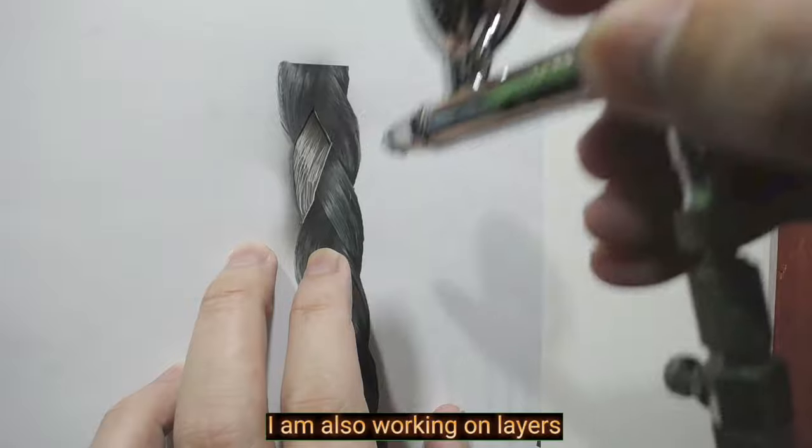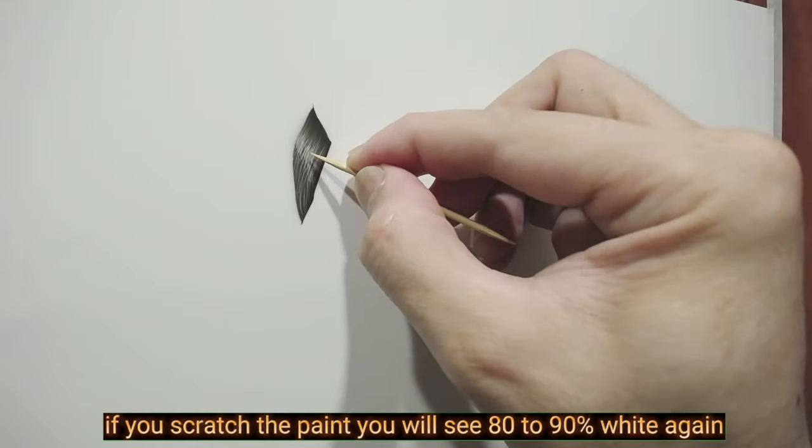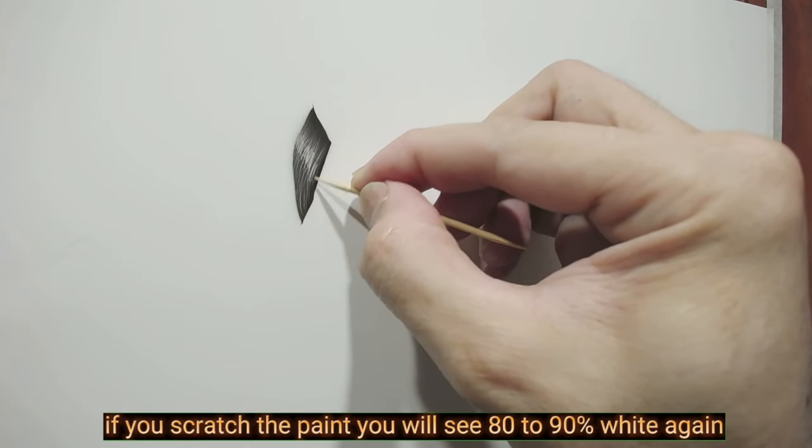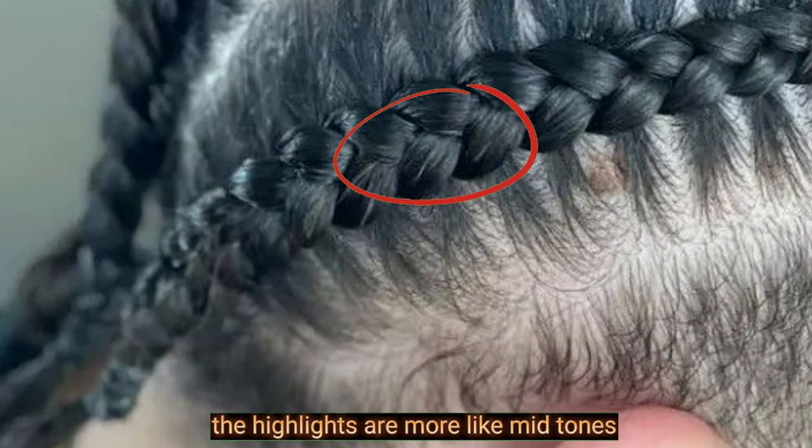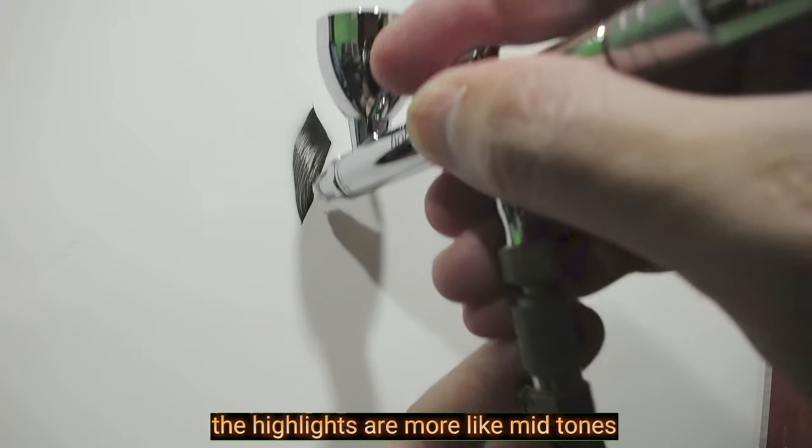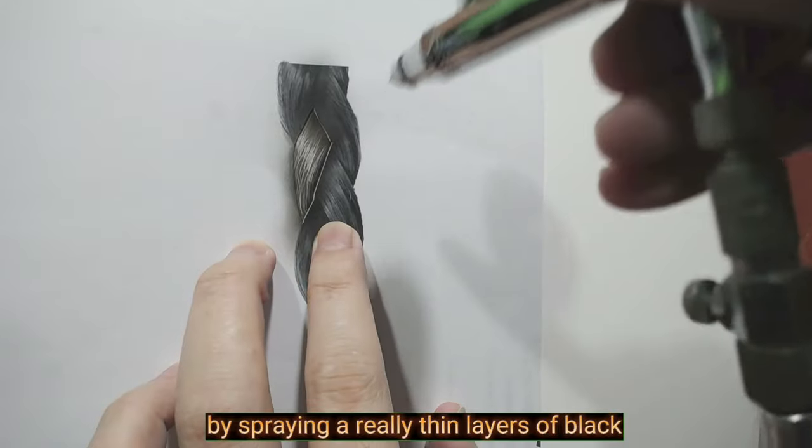I am also working on layers. Depending on the value of the highlight, if you scratch the paint, you will see 80-90% white again. In some areas of the reference, the highlights are more like mid-tones. So you have to tone the scratch area by spraying really thin layers of black.